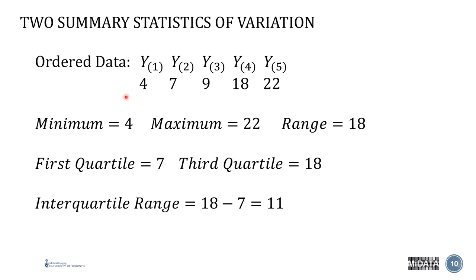If we then consider the ranking of the data, if you remember correctly, the center of the data, which was the median and was 9, is now going to become the second quartile. So the median represents the second quartile. The first quartile, in this case, because the data set is so simple, the first quartile is here at 7. The third quartile will be here at 18. And the interquartile range is very simply going to be the difference between your first and third quartile, which is 18 minus 7 and equal to 11.